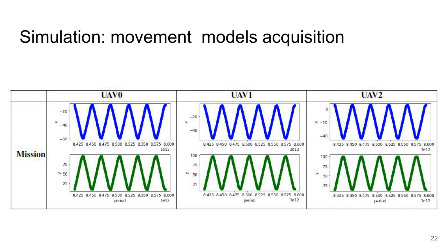From the planned mission, simulations were carried out using the Gazebo simulator together with the set of tools provided by the PX4 firmware package. During the simulations, the pose data of each vehicle was collected and served as a basis for acquiring the movement models used in the pose estimation, as shown in the graphics. In these models, the x and y axes are shown in a one-dimensional way; since the planned mission has a constant altitude, the z-axis is not considered. From these acquired movement models, the estimation algorithms are adjusted.